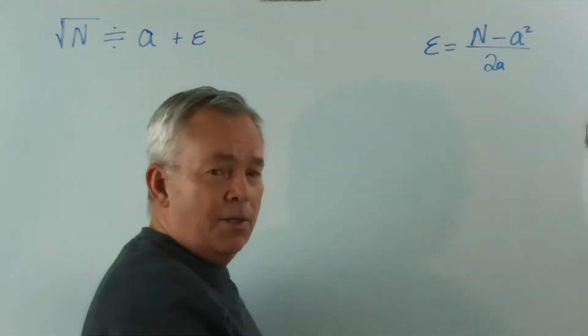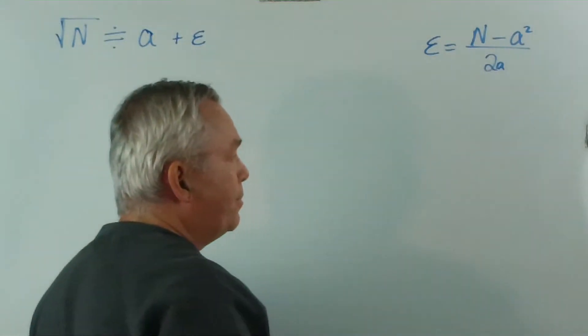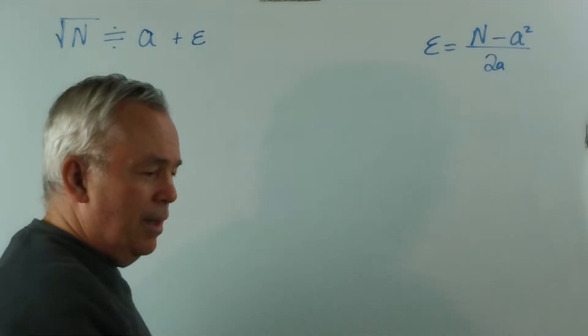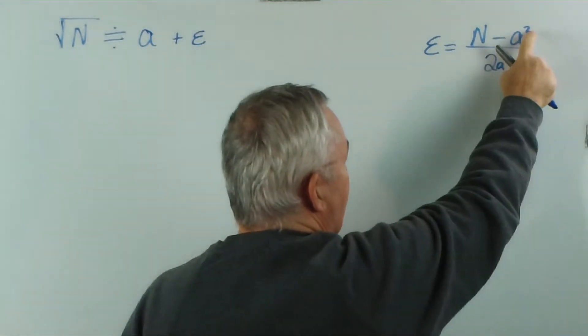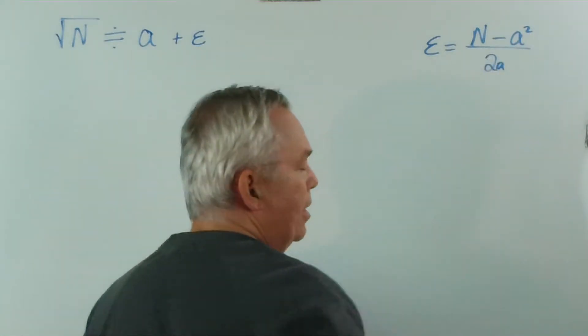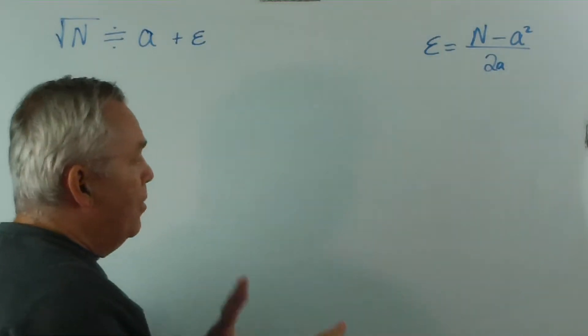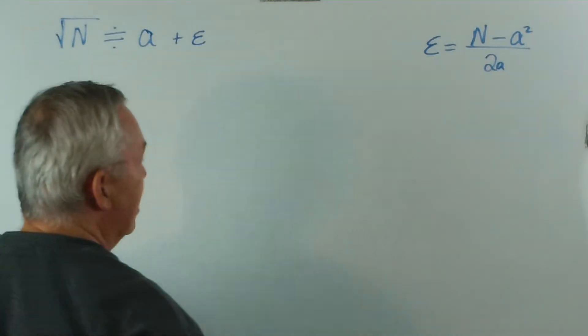For those of you who know calculus, 2a is the derivative of a squared. And if you want to find a different root, like a 17th root, you'd have a to the 17, and you'd have 17a to the 16 here. That's just for those who understand calculus. If you don't, don't worry. We're just going to find a square root at the moment, and this is how it's done.